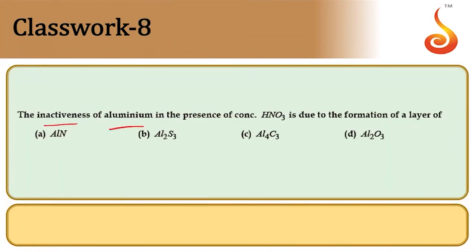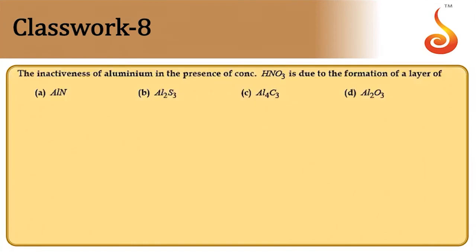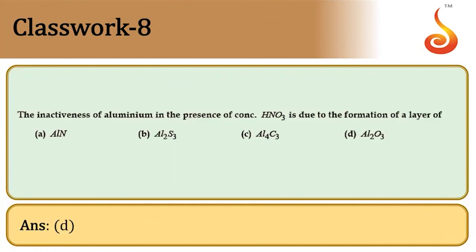The inactiveness of aluminium in the presence of concentrated HNO₃ is due to the formation of alumina (Al₂O₃), a protective oxide layer. Answer is option D.